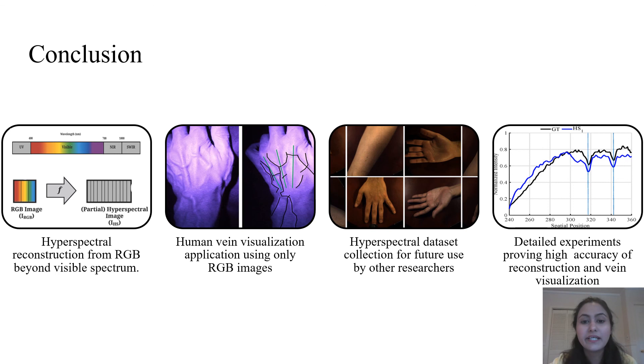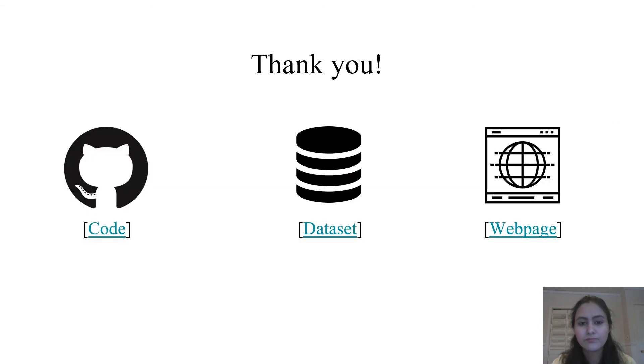In conclusion, we propose a data-driven method to reconstruct hyperspectral images from RGB images. Our method is the first to produce hyperspectral recovery from RGB beyond the visible spectrum. We show the potential of our method by developing a human vein visualization application that uses only regular RGB images. We conduct a subjective study to collect a dataset of hyperspectral images to evaluate the performance of the proposed vein visualization method. This is the first dataset in this domain and we make it available for other researchers. We conduct experiments to show the accuracy of our RGB to hyperspectral conversion method as well as the accuracy of the vein visualization application.